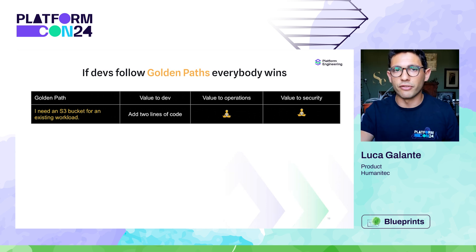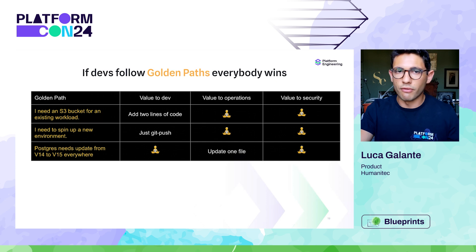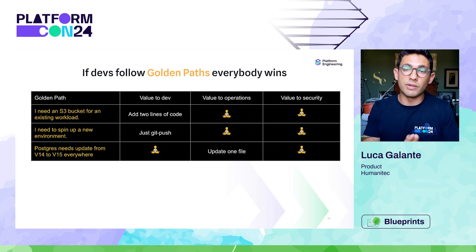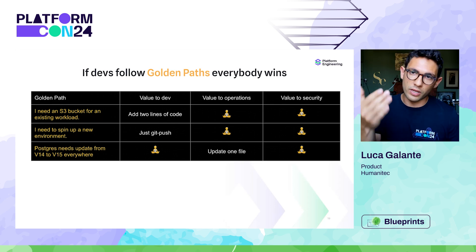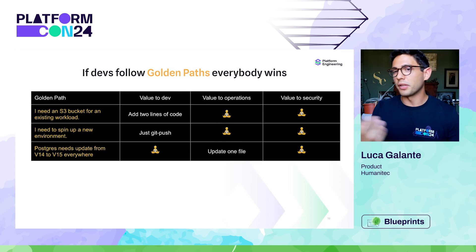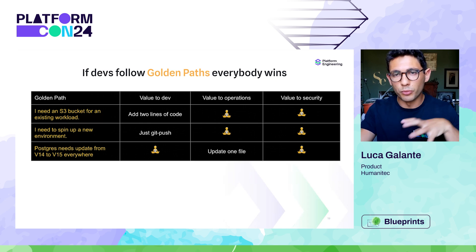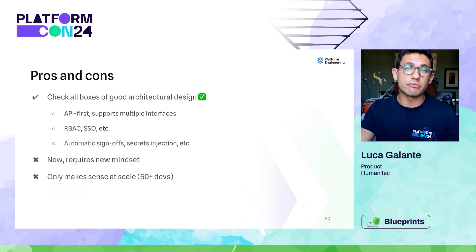If developers follow the golden path the orchestration layer enforces by default, everybody wins. To add a new resource, you only need two lines of code — ops and security teams don't need to be involved at all. For example, to upgrade a Postgres instance from v14 to v15: in a traditional setup, the infrastructure team would go one by one to each application team. With orchestration, you update one file, security vets it, and it automatically rolls out across all deployments according to your rollout policies.